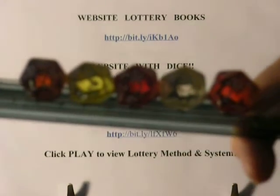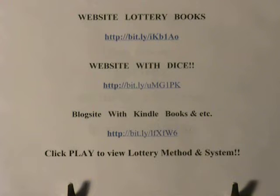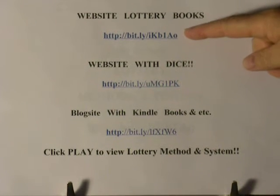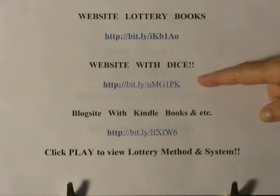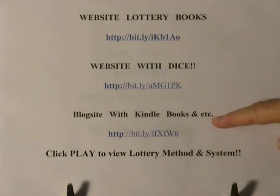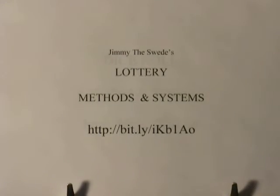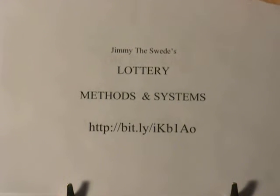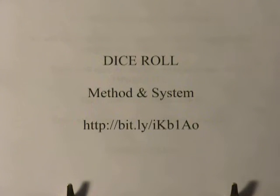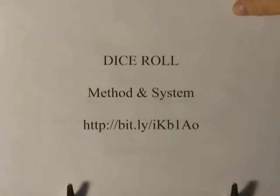Here are five 20-sided dice, but today we'll only be using one. We have a website for lottery books, a website for dice where you can roll dice online, and a blog site for Kindle books including lottery books. We're going to discuss Jimmy the Swede's lottery methods and systems, specifically the dice roll method using 20-sided dice.